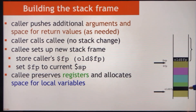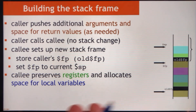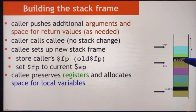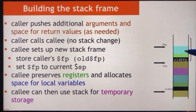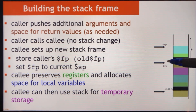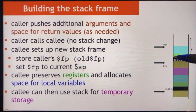Then we preserve any registers we might need to use, including specifically the return address, and we allocate any space needed for local variables within the procedure. The green represents saved registers like the return address, and the blue represents space for local variables. The frame pointer stays static, the stack pointer stays at the top of the stack, and we can access local variables, stored registers, and anything from the previous frame relative to the frame pointer. We go below the frame pointer for arguments and return values, and above it for local variables and registers.